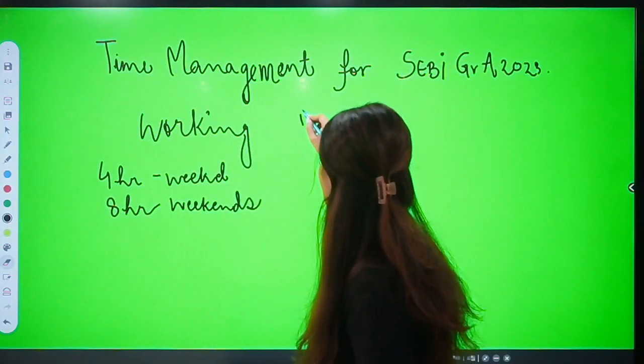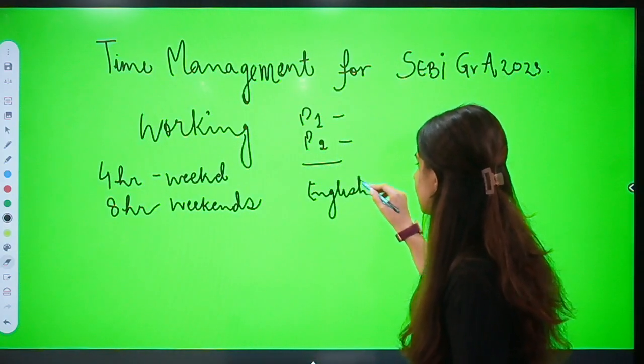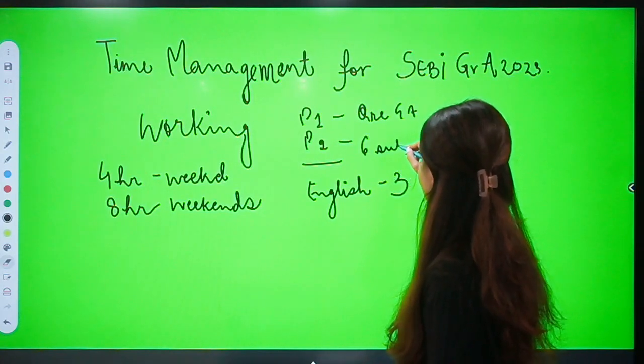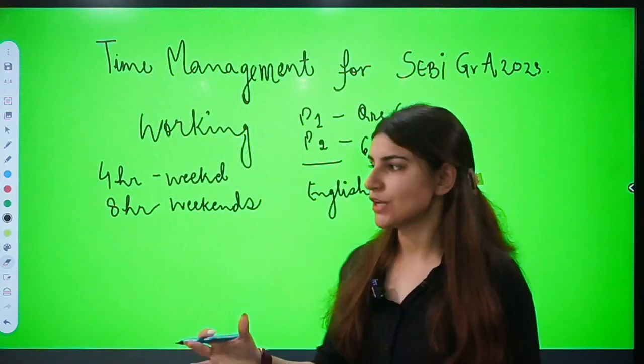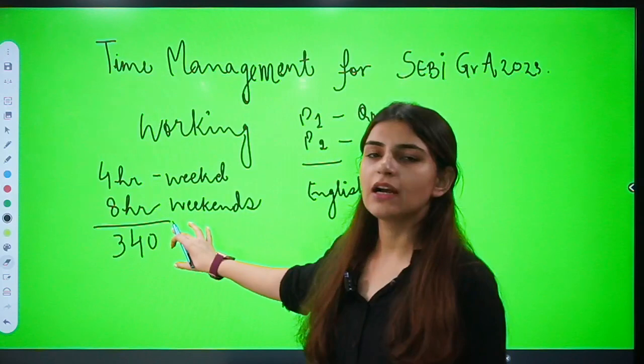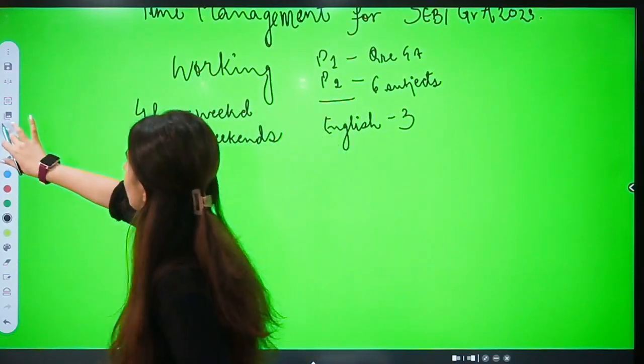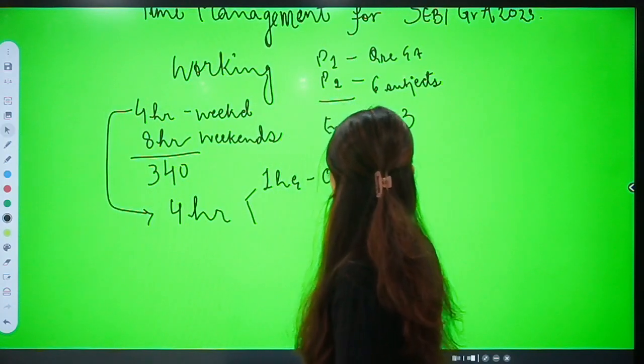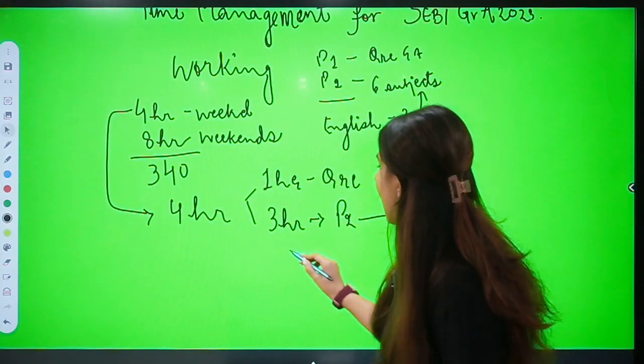Now you have to understand, we have paper 1, paper 2, and English for phase 2. These are the three things we have to juggle at the same time. Paper 1 may be with QRE and GA, and paper 2 with six subjects. So we have to manage our time accordingly. Considering the exam is taking place around February, we have 2.5 months left - December, January and November. So you have around 340 hours or 240 hours according to 2.5 months that we have left. How do you utilize these four hours? Talking about weekdays, since you have four hours, you can give one hour each day to QRE, three hours each day for paper 2 which is these six subjects.